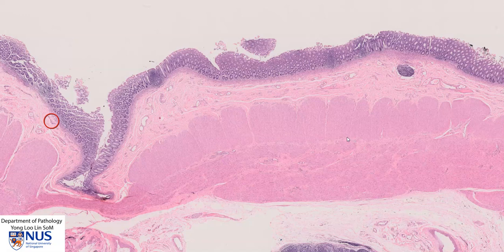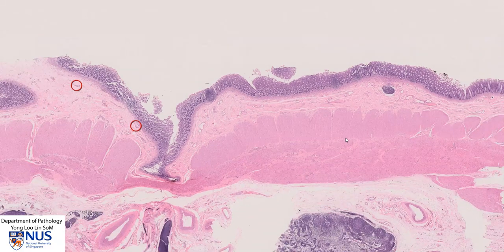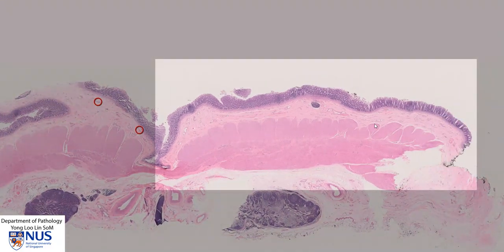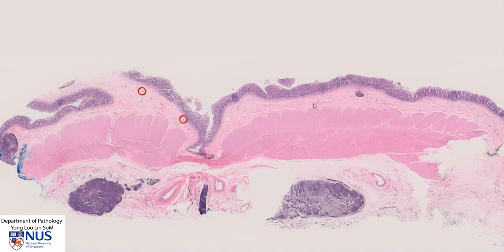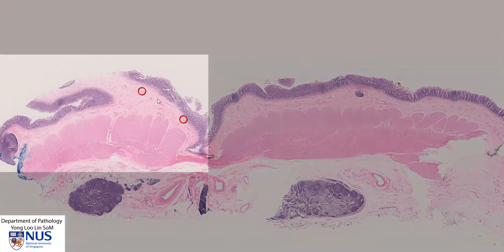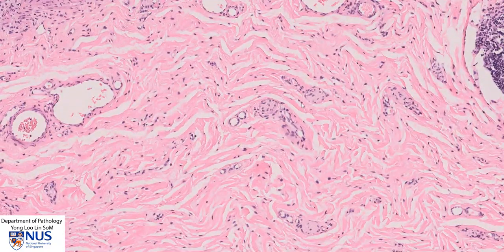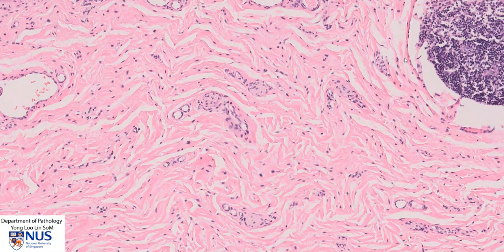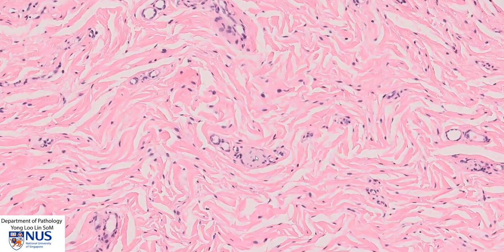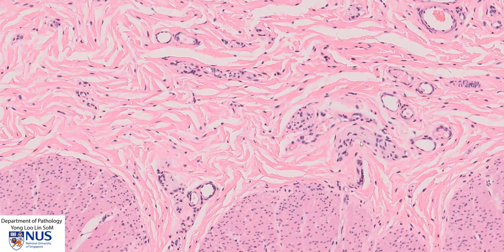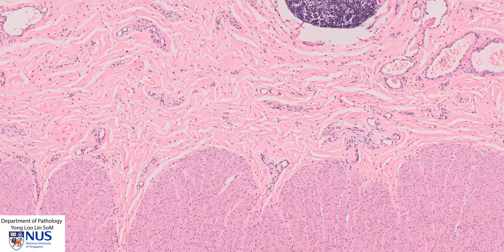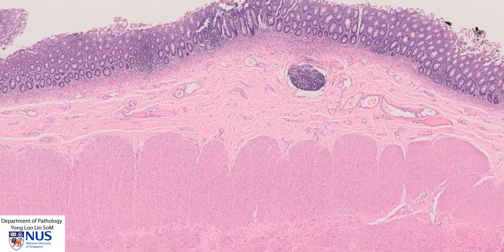Hirschsprung disease is also known as congenital aganglionic megacolon, meaning there is a distal segment of the rectum that is devoid of ganglion cells. Here is the abnormal segment — this is usually very small in diameter and shrunken because of functional obstruction, and the proximal, normally innervated segment is usually dilated due to the obstruction. Looking at the submucosal nerve plexus, we can see some small nerve twigs, recognizable by their pale color and the presence of spindle cells — these are Schwann cells — and we do not see any ganglion cells.